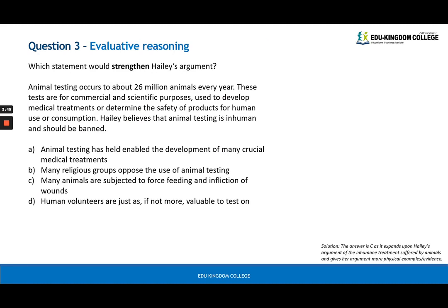All right, evaluative reasoning. Which one would strengthen Haley's argument? So we know it's about animal testing and Haley's main argument is located at the very end. Haley believes that animal testing is inhumane and should be banned. Inhumane means that it is not ethical, it is not something that should be done on another animate living thing. So which of the options would strengthen this idea that animal testing is inhumane? The answer is C: many animals are subjected to force feeding and infliction of wounds. So this basically shows the extent of the inhumane treatment that Haley believes in and that comes with animal testing, so C gives more evidence to that and will strengthen the argument.